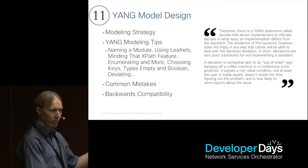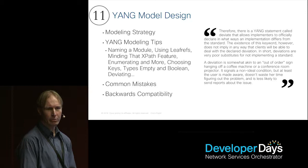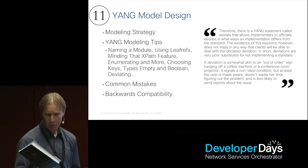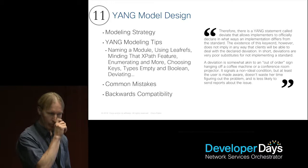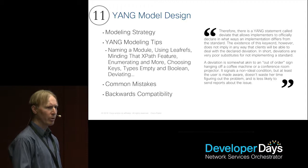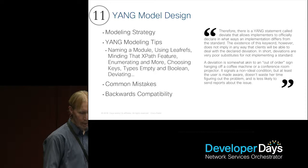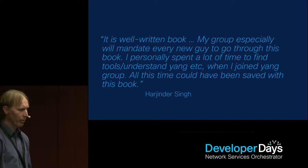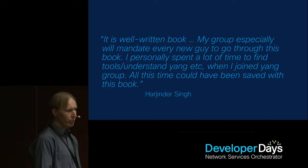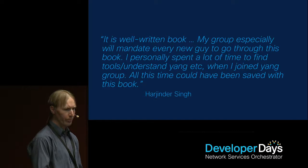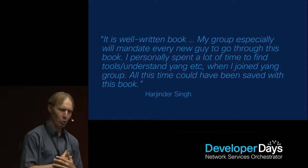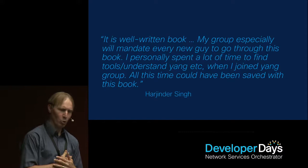So that gives you a feeling of all 11 chapters — some sort of sample from each one. The book is quite new, published around mid-May. It's available on O'Reilly Safari Books, Amazon, Informit, and a bunch of other places. We did get a couple of reviews, and here's one I particularly like: 'It's a well-written book. My group especially will mandate every new guy to go through this book. I personally spent a lot of time to find tools, understand Yang, when I joined the Yang Group — all this time could have been saved with this book.' That's exactly what I wanted people to feel: save them time, make things easier, get an overview of what's going on. That's exactly what this book is about.